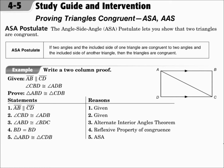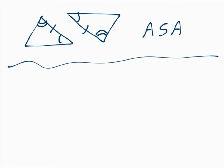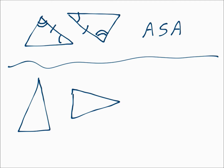ASA is when you have two angles and the side in between them. AAS is when you have two angles and the very next side — not between the angles, but the next one. So if you have one pair of angles, the very next pair of sides, and the very next pair of angles, that's Angle-Side-Angle, and those triangles are congruent. If you have one pair of angles, the next pair of angles, and the next pair of sides, that's Angle-Angle-Side, and those triangles are congruent.